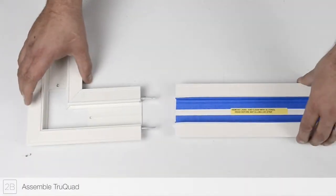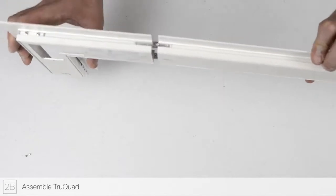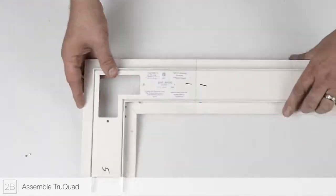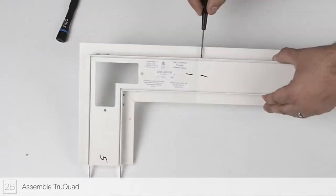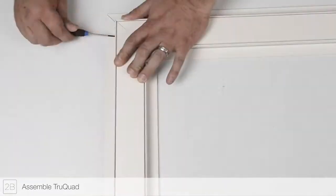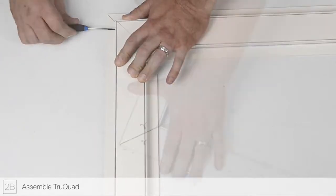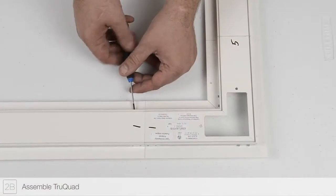Assemble the true quad configuration by attaching the L-shaped power channel connector to one of the straight channel sections, as required by the installation, using the included joiner bars. Join the mitered corners of the straight channel sections using the included joiner bars. Repeat for additional mitered corners as necessary.